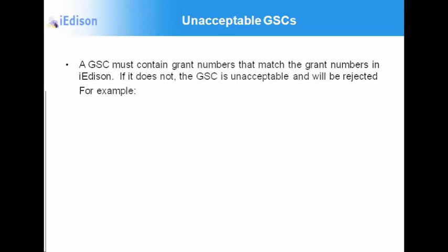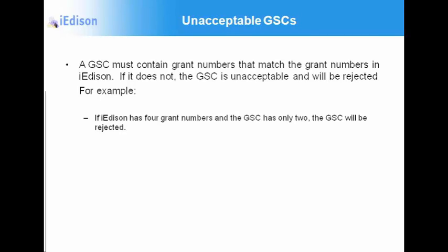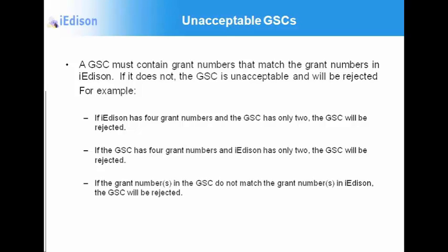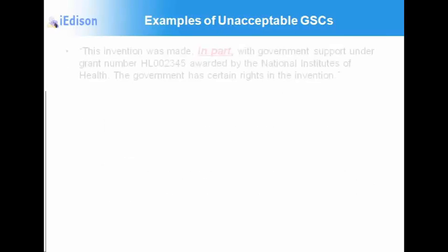Unacceptable government support clauses include those where the grant numbers do not match the grant numbers in iEdison. If they don't match, we will reject the government support clause. For example, if iEdison has four grant numbers and your uploaded government support clause only has two, we will reject it. Conversely, if the GSC has four grant numbers and iEdison only has two, we will also reject your government support clause.